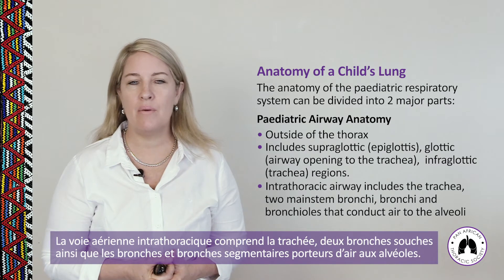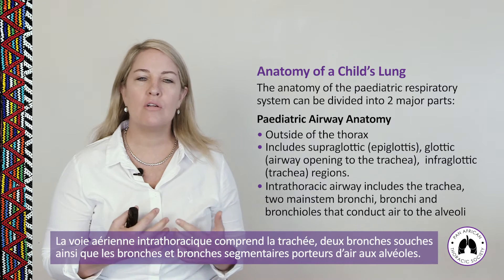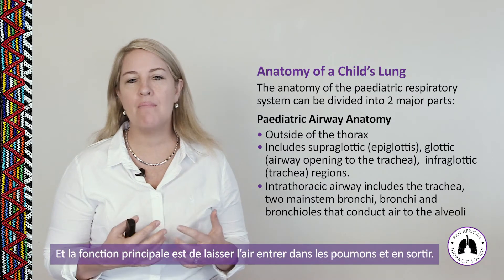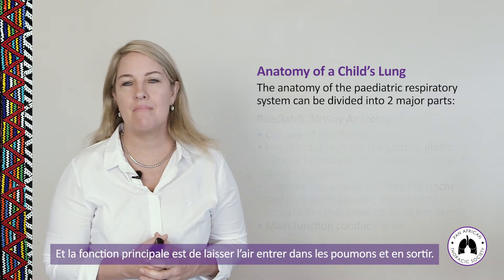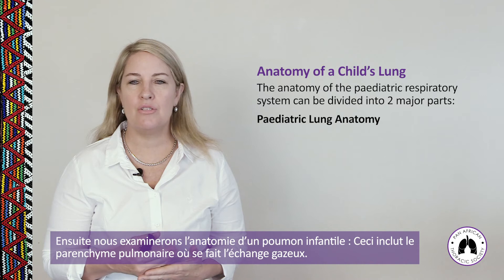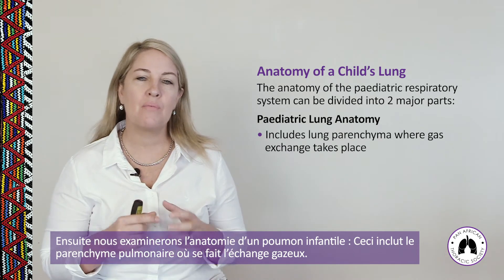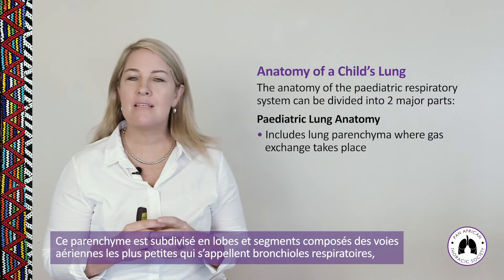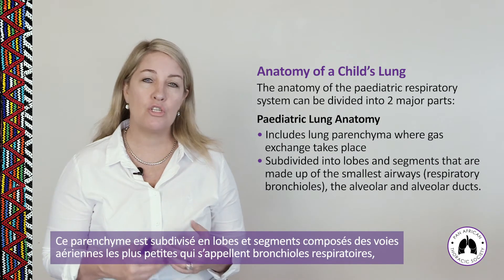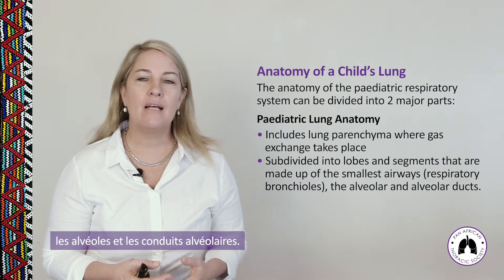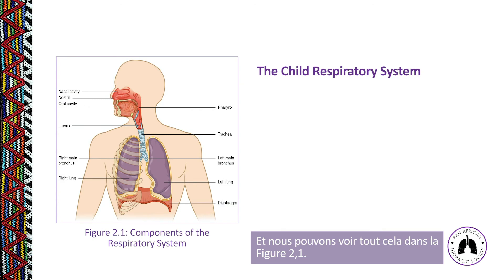The intrathoracic airway includes the trachea, two main stem bronchi, all the bronchi and bronchioles that conduct air to the alveoli, with the main function of conducting air in and out of the lungs. Lung anatomy includes the lung parenchyma — the portion where gas exchange takes place — subdivided into lobes and segments made up of the smallest airways: the respiratory bronchioles, the alveoli, and the alveolar ducts.